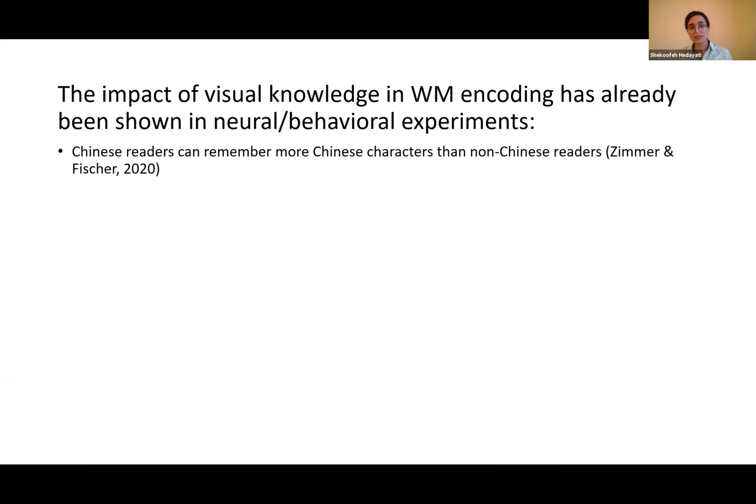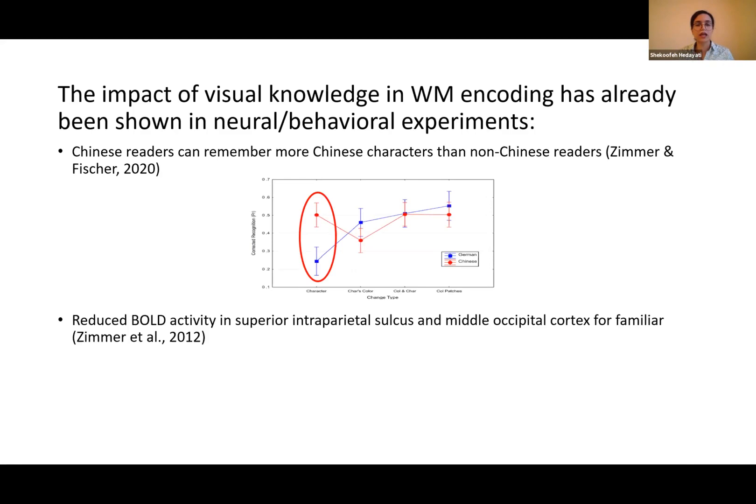For example, a Chinese reader can remember more Chinese characters than non-Chinese readers or German readers, as you can see in Zimmer and Fitcher data. And also there is brain evidence showing that the regions responsible for working memory show reduced BOLD activity when items are familiar versus when they are unfamiliar.